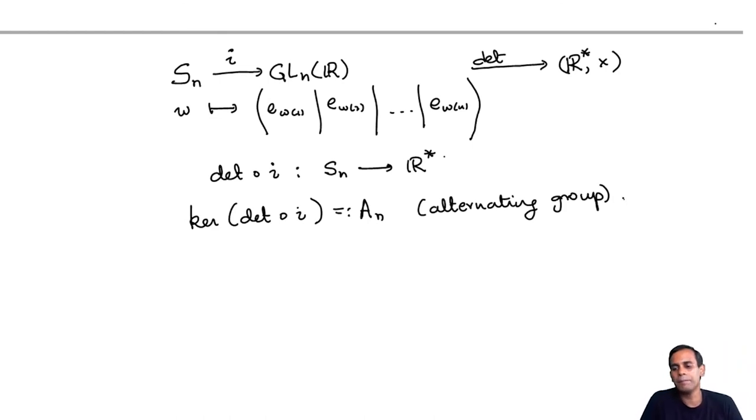And the kernel of determinant circle i is what is called the alternating group An. This is the subgroup of permutations, the permutation group consisting of all permutations for which the corresponding permutation matrix has determinant plus 1. And because it is the kernel of a homomorphism, An is a normal subgroup of Sn.